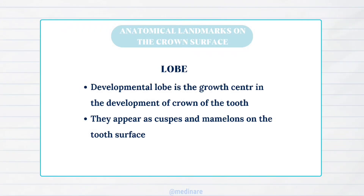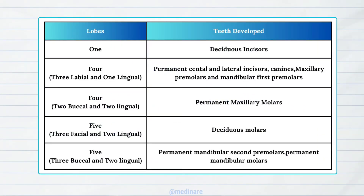Developmental lobe is the growth center in the development of the crown of a tooth. Each tooth begins to develop from four or more developmental lobes, and they clinically appear as cusps and mamelons on the tooth surface. Here is a list of the teeth and their respective developmental lobes.